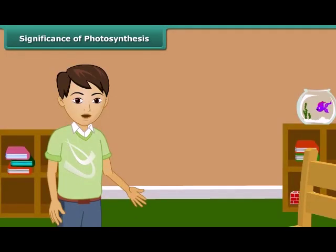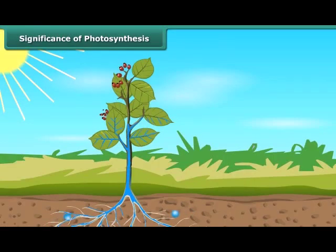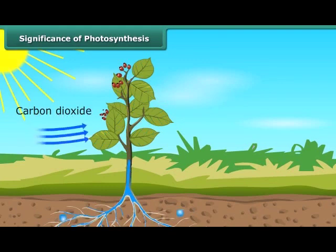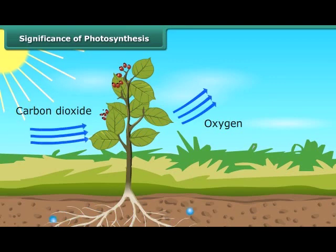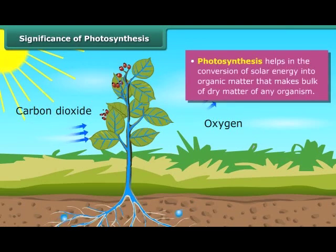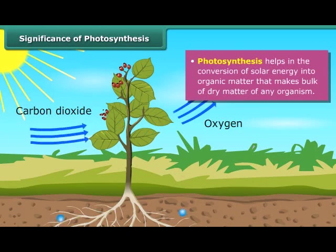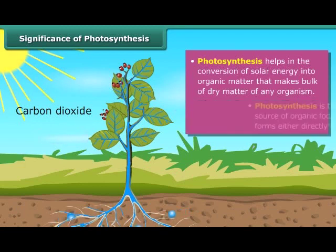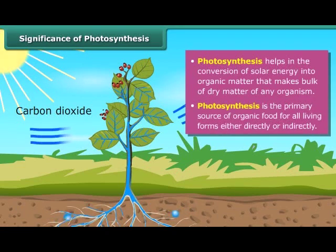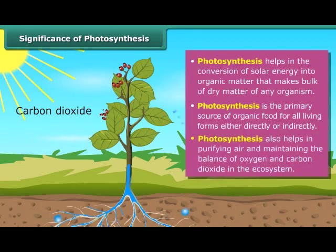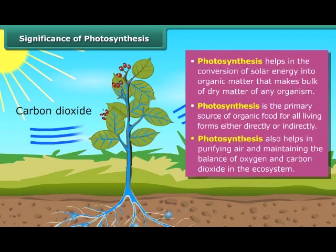Till now we have learnt about the photosynthesis process, but now the question is what is its significance? Photosynthesis is an important and vital process for life on this planet. This process helps in the conversion of solar energy into organic matter. Hence, photosynthesis links the physical and biological world. It is the primary source of organic food for all living forms, either directly or indirectly. It also helps in purifying air and maintaining the balance of oxygen and carbon dioxide in the ecosystem.